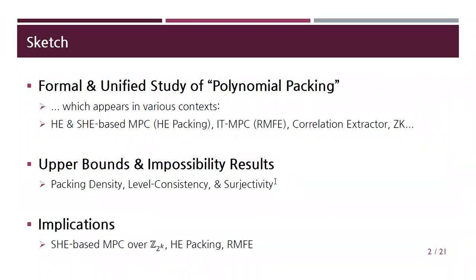I want to begin with a sketch of our work. The starting point is an observation that very similar mathematical objects are being studied independently in subfields of cryptography. We abstract these concepts as what we call polynomial packing and initiate a formal and unified study of polynomial packing. We then prove upper bounds and impossibility results — that is, we prove we cannot achieve certain levels of efficiency and cannot construct some polynomial packing satisfying desirable features.